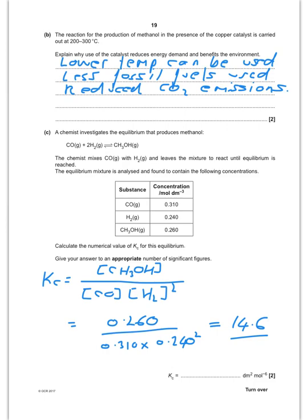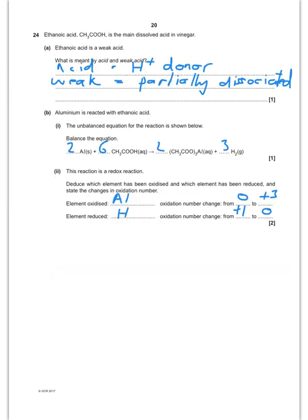A nice calculation for Kc coming up now. Write down Kc, pop your numbers in, and you should get it to be 14.6. You can only quote it to 3 significant figures because these values here are only to 3 significant figures.